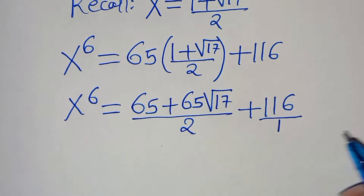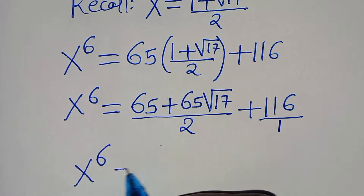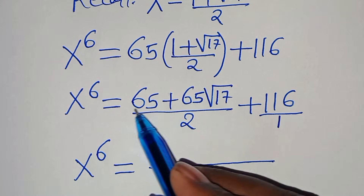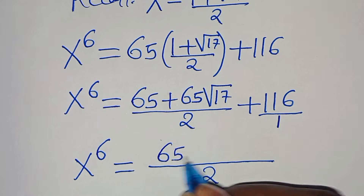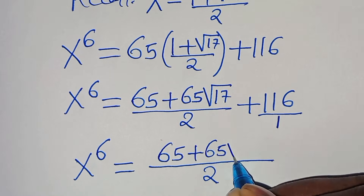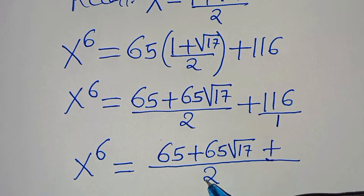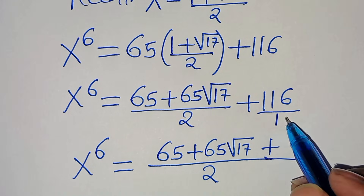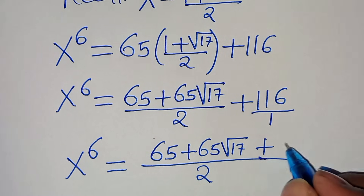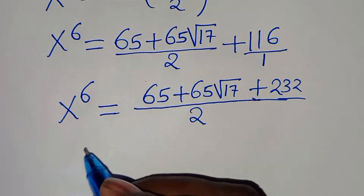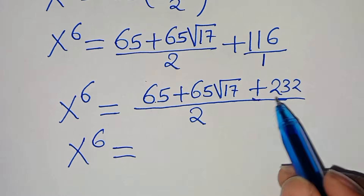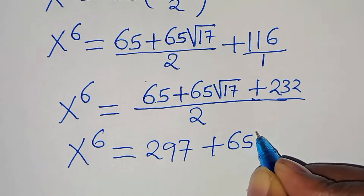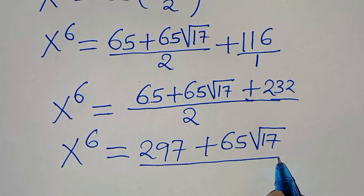Since 116 is over 1, we find the LCM which is 2. So x to the power of 6 equals (65 plus 65 root 17 plus 2 times 116) all over 2. Now 2 times 116 equals 232. So x to the power of 6 equals (65 plus 232 plus 65 root 17) over 2, which is (297 plus 65 root 17) divided by 2.